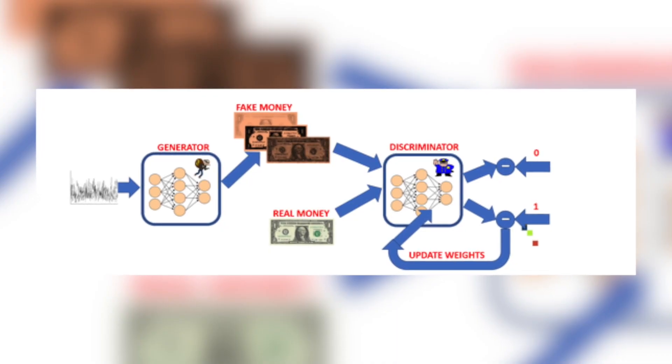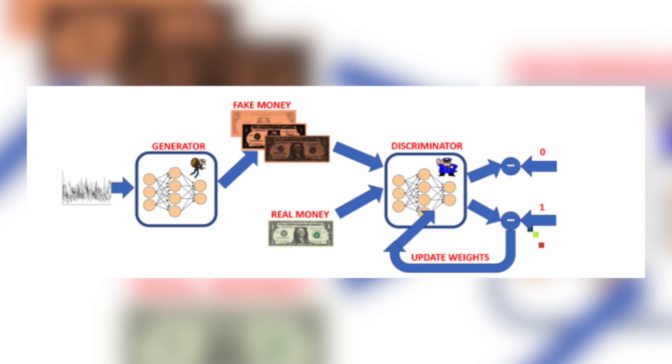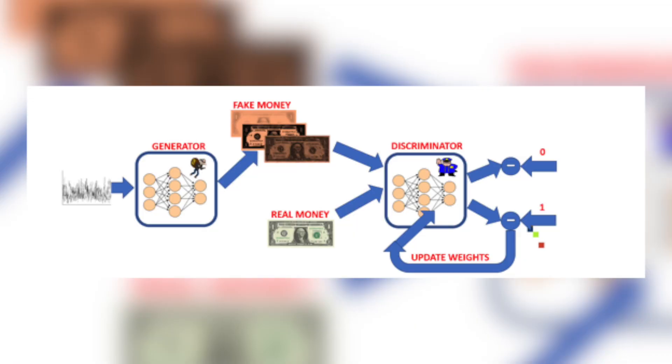Now let's put the generator and discriminator together and train them. For discriminator training: the generator takes in random noise and generates fake images; both fake and real images are fed to the discriminator in its feed-forward path; the discriminator generates predictions compared to the true labels and the error is calculated. This is a basic binary classification task — the discriminator is trained to predict one for real images and zero for fake ones. The loss is propagated through the network to update the discriminator weights via backpropagation. Note that the generator weights are not updated at this stage.